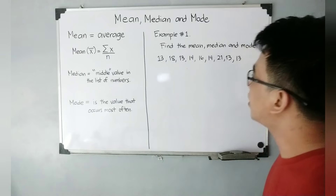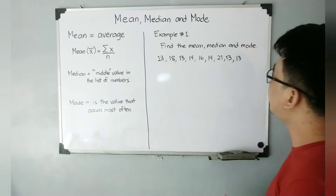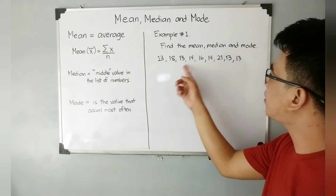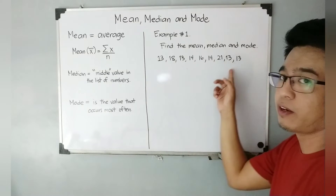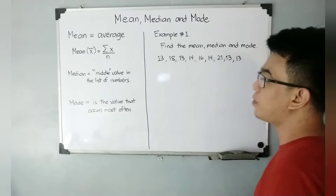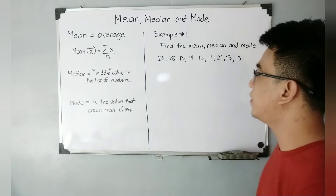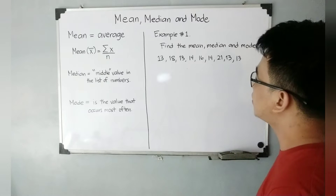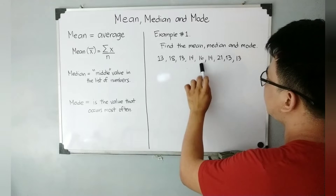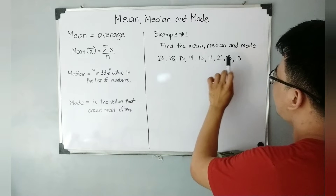So here is Example Number 1, wherein the problem is: find the mean, median, and mode. We have the given dataset: 13, 18, 13, 14, 16, 14, 21, 13, and 13. These are examples of ungrouped data.